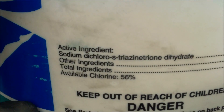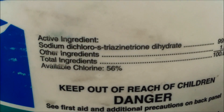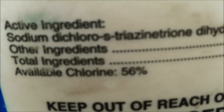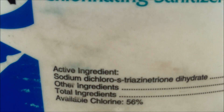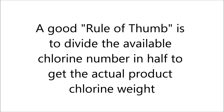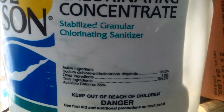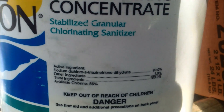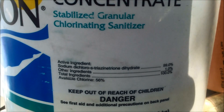To get the amount of chlorine in the product, you take the molecular weight and divide it by the formula weight. It's a complex math formula, but the simple rule of thumb is you take the available chlorine number — which is 56% here — and just divide it in half. That gives you the chlorine by weight of the product. So the 56% dichlor is about 28% chlorine by weight, and the rest is the cyanuric acid stabilizer in it.